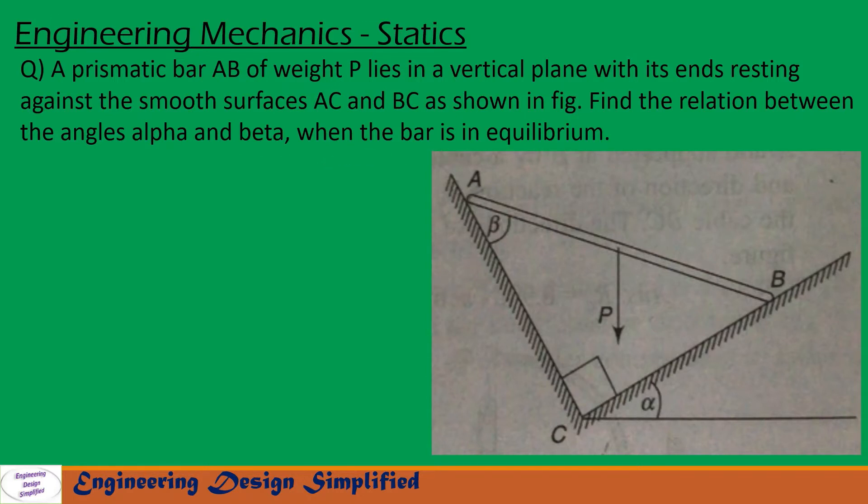In this problem, given is a prismatic bar AB of weight P arranged like this, and angle between this surface and horizontal is alpha. Angle between these two surfaces is 90 degrees and angle between prismatic bar and this surface is beta. So we need to find for equilibrium the relationship between beta and alpha. Let us see in the coming slides how to solve this problem.